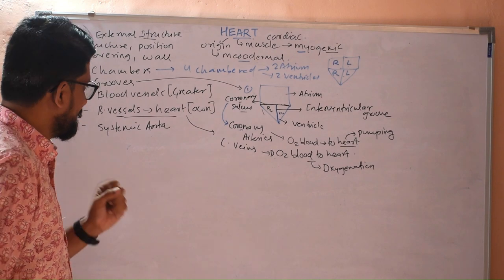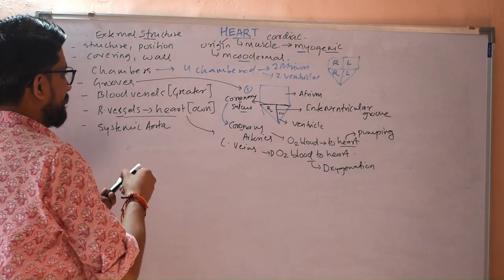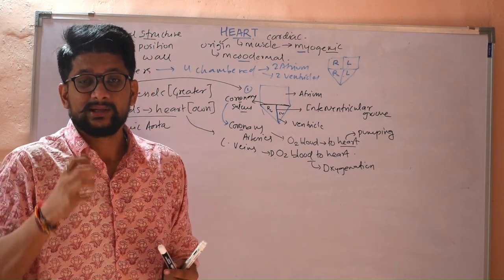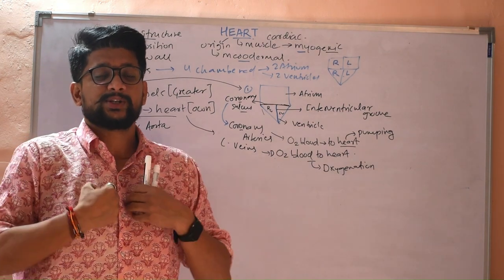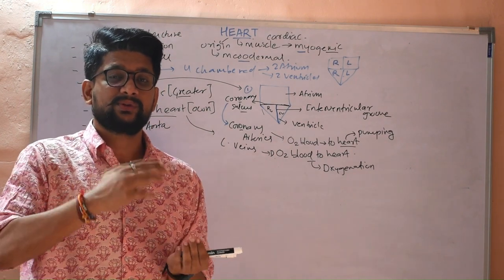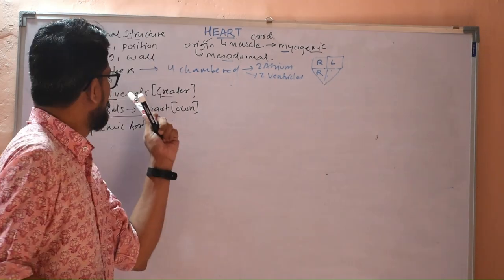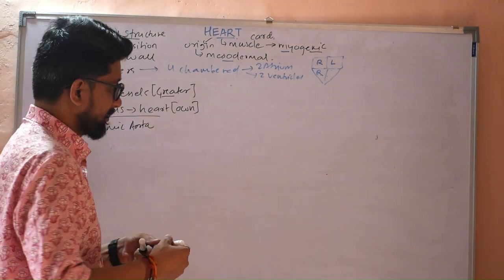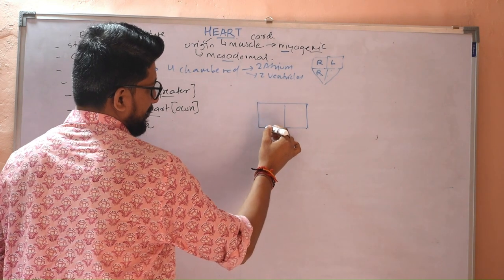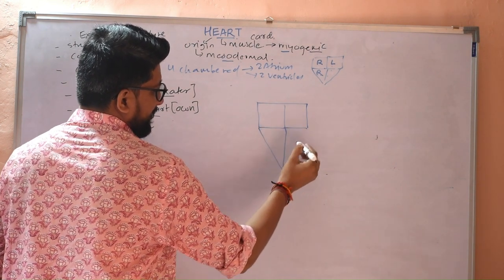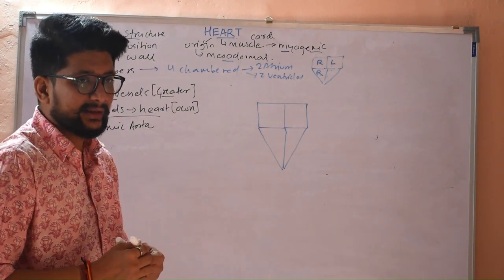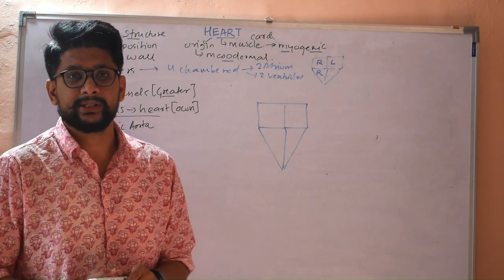So those were the two grooves of the heart: the coronary sulcus, responsible for dividing the heart into atrium and ventricle, and the interventricular groove, responsible for dividing the ventricles into right and left parts. Next we will study the blood vessels — specifically the greater blood vessels. We call them greater blood vessels because they are large in size and perform the very important functions of carrying oxygenated and deoxygenated blood.